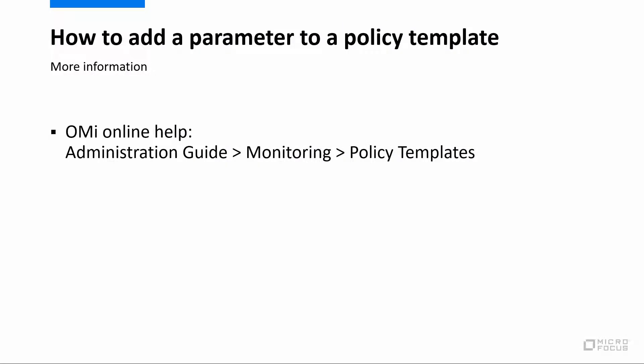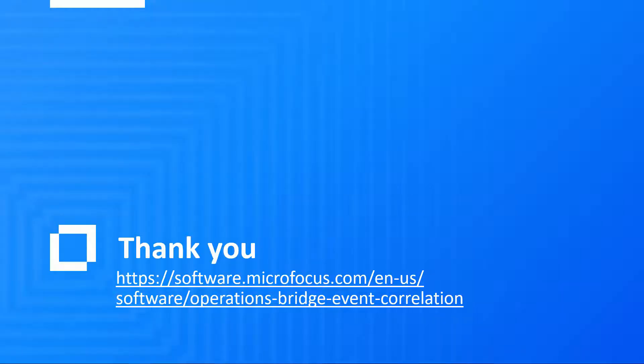For more examples and details about the parameter types, like string, numeric, etc., and about all the flags and their purposes, please see the OMI online help. Thank you.